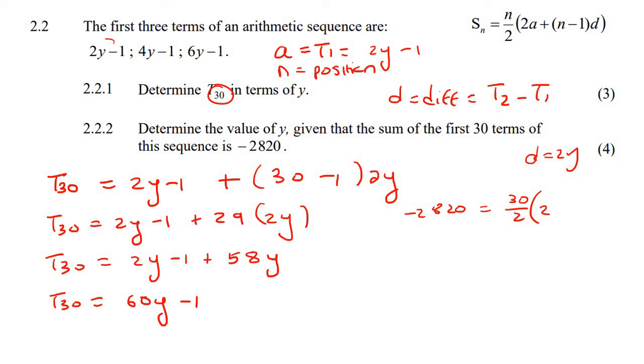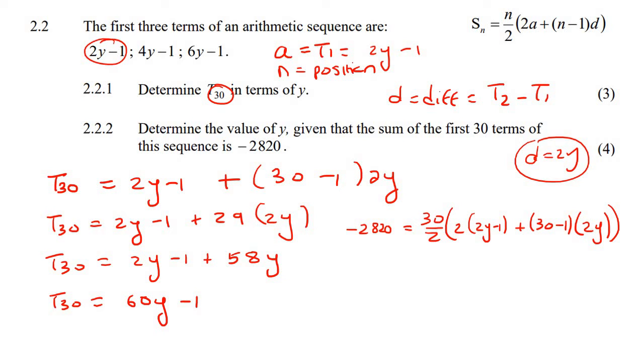Now a is term 1, which is still going to be 2y minus 1, plus how many terms? 30. And then the common difference from earlier we said was, we calculated it as 2y.